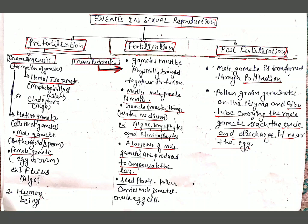Gametogenesis means the formation of gametes. If both types of gametes are morphologically similar, they are known as homogametes or isogametes — example: Cladophora alga. If both gametes are different or distinct, they are known as heterogametes. In heterogametes, the male gamete is known as antherozoid or sperm, and the female gamete is known as egg or ovum — example: Fucus alga and human beings.